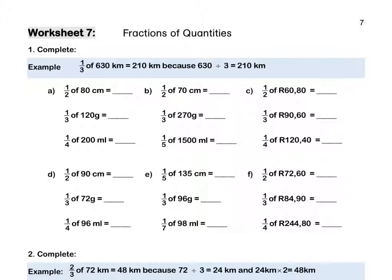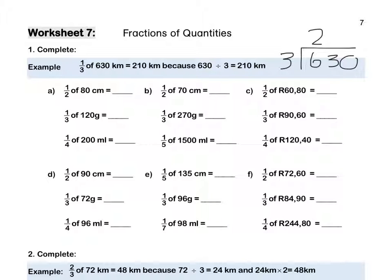Worksheet 7. Question 1. One third of 630 kilometres is 210 kilometres, because 630 divided by 3 is 210. You may need to do a division sum on the side: 3 fits into 6 twice, fits into 3 once, and into 0, zero times, to get our answer of 210 kilometres.